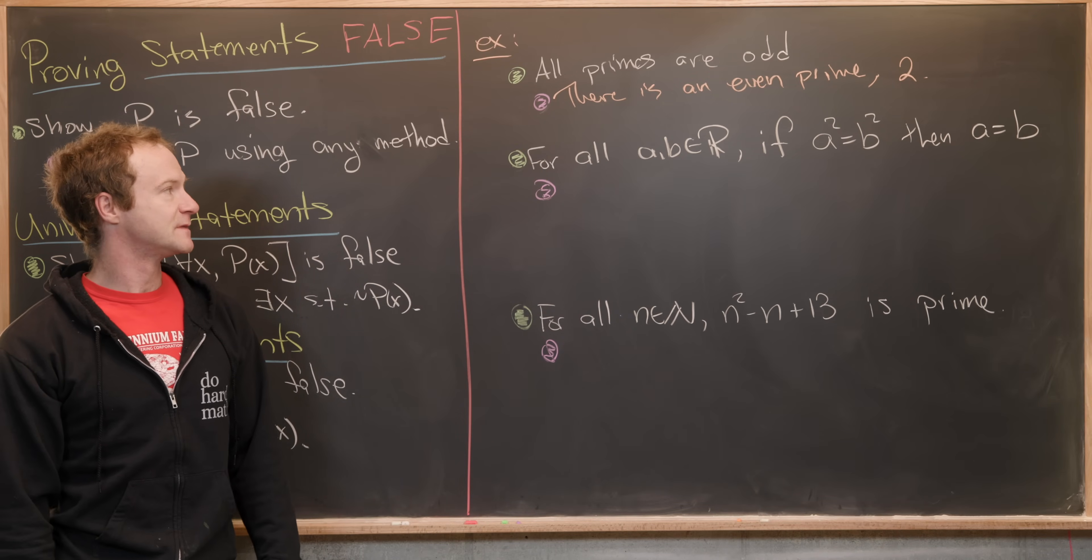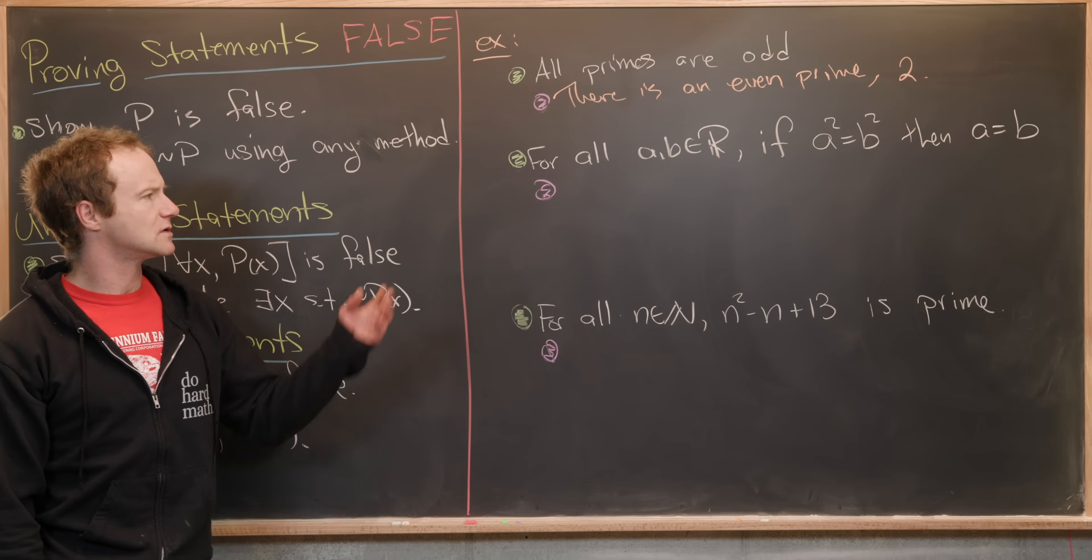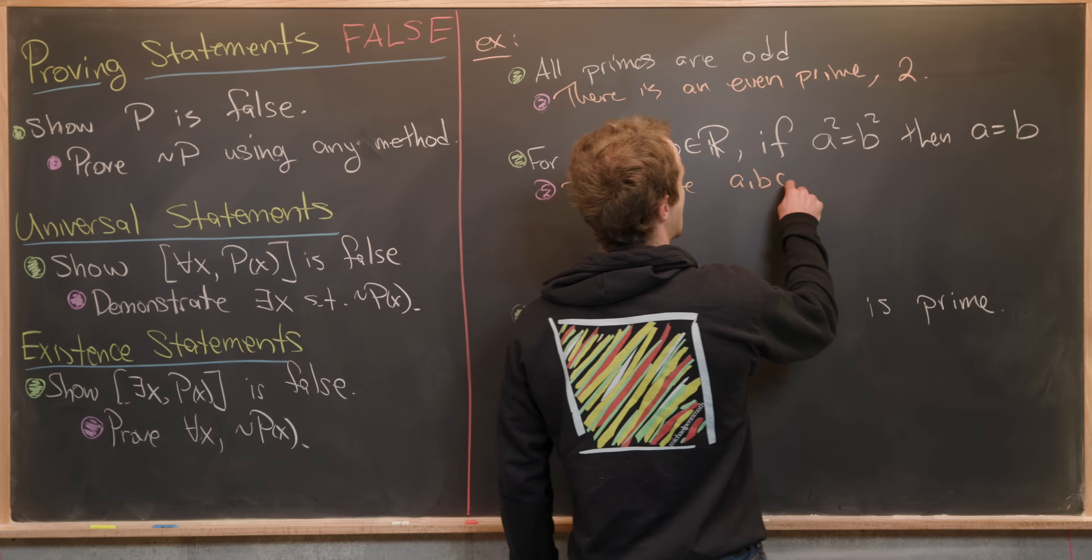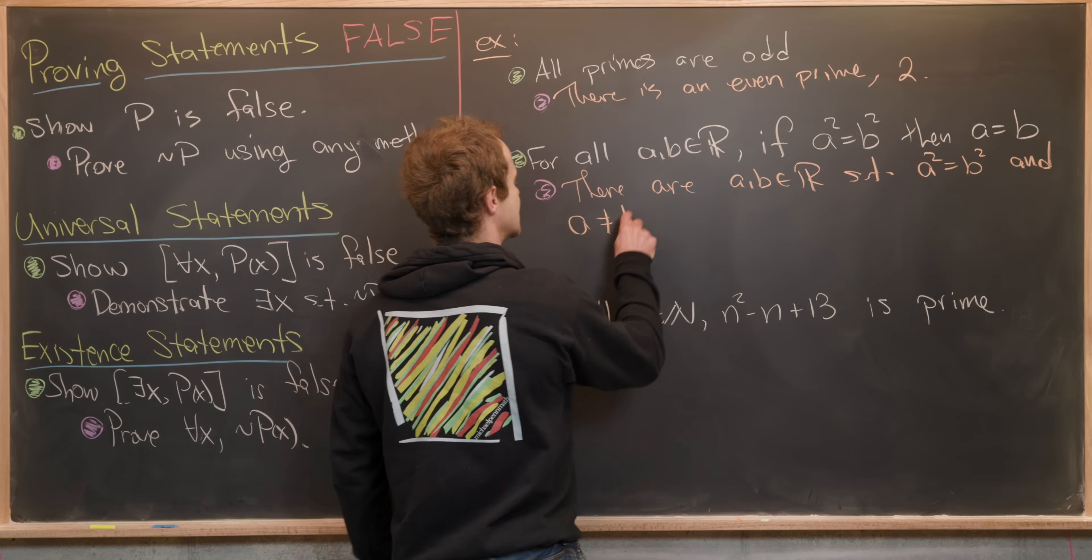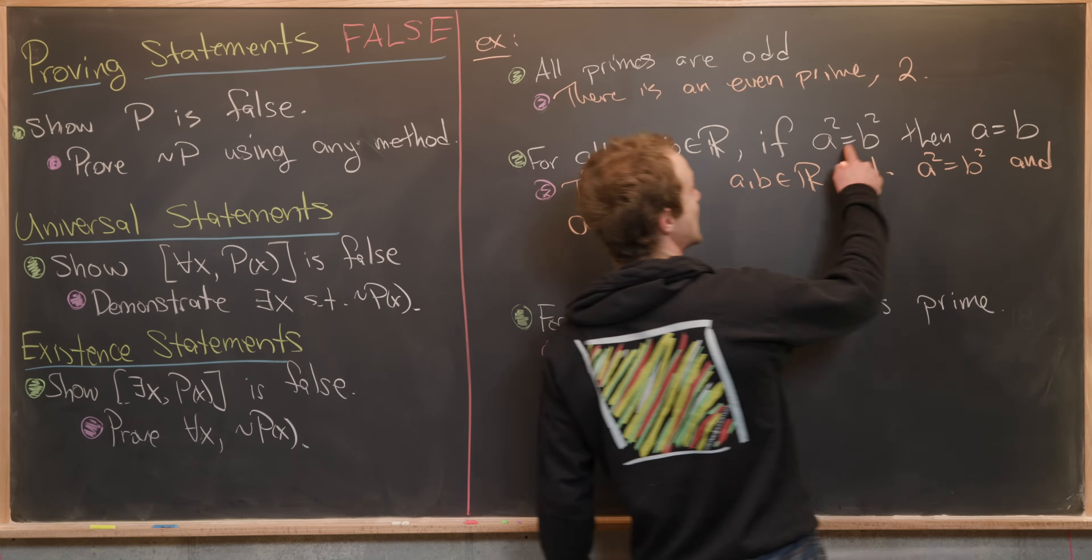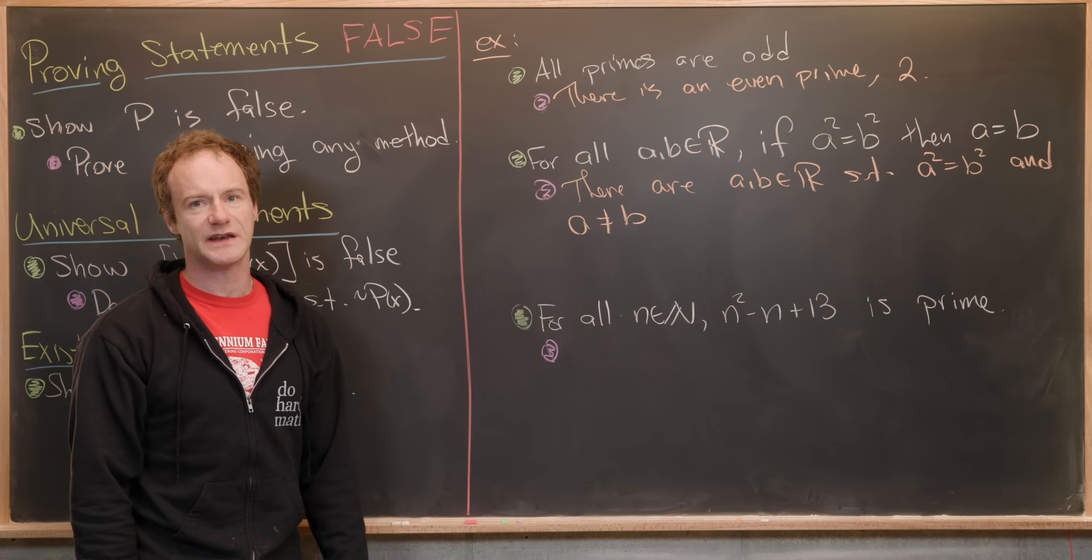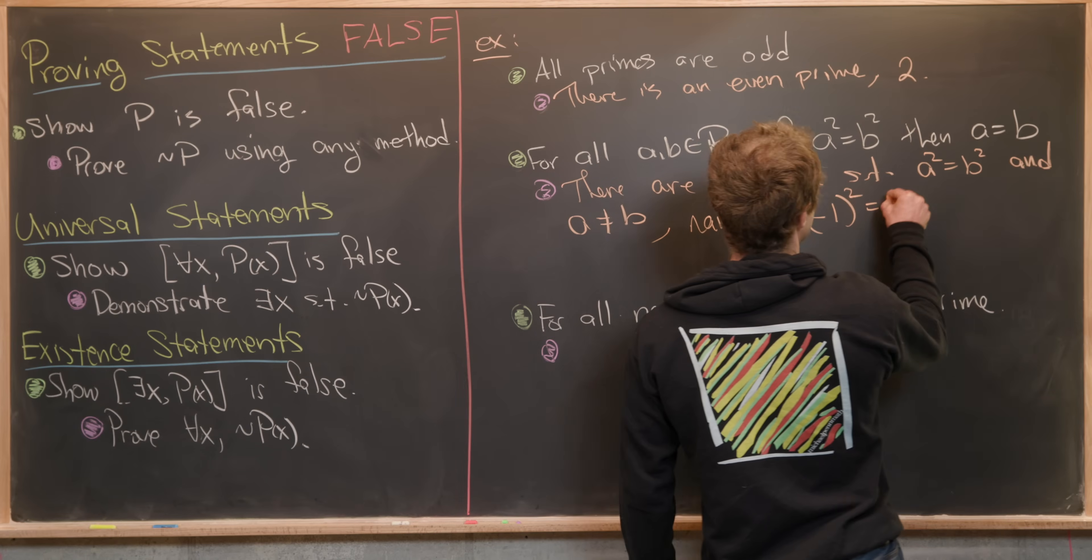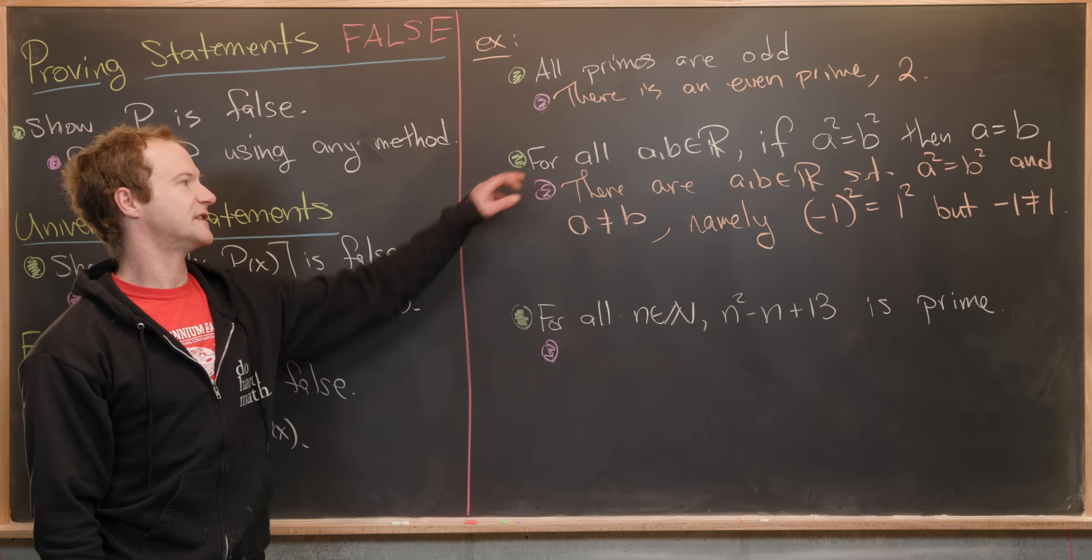Now let's move on to this one. This says for all real numbers A and B, if A squared equals B squared, then A equals B. Let's negate this statement and then show that the negation is true. There are real numbers A and B such that A squared equals B squared and A is not equal to B. Notice an if then statement turned into a P not Q statement. The negation of P implies Q is P and not Q. Now to finish this off, we need to give an example of this actually happening. Minus 1 squared equals 1 squared, but minus 1 is not equal to 1. So there we gave a counterexample to show that this universal statement was false.